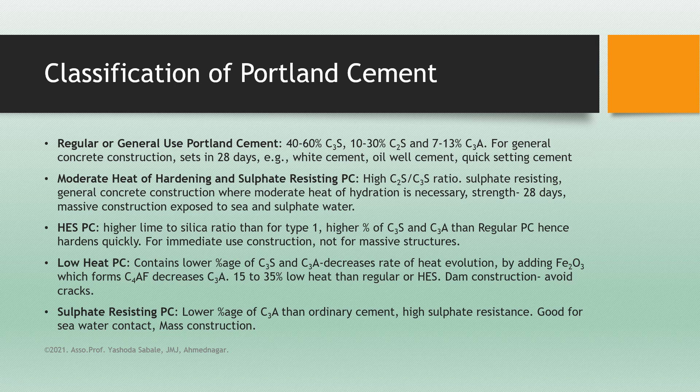Type 3 is high early strength Portland cement. It has a higher lime to silica ratio than Type 1, and a higher percentage of C3S and C3A — tricalcium silicate and tricalcium aluminate. This cement has a high percentage of these compounds compared to regular Portland cement and hence hardens quickly. It is used for immediate use in construction but not for massive structures.